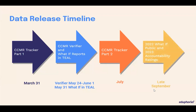Finally, the what-if reports will be public and those 2023 accountability ratings will actually be released in late September. We always have information that Axiom can do in that projection, but the official accountability ratings that are only assigned by the state will come out in late September.